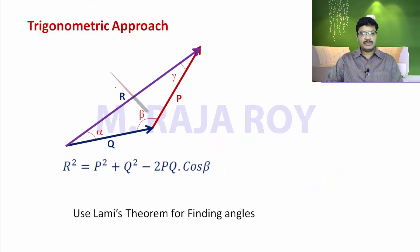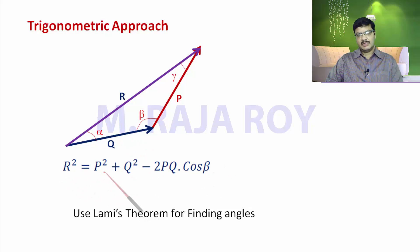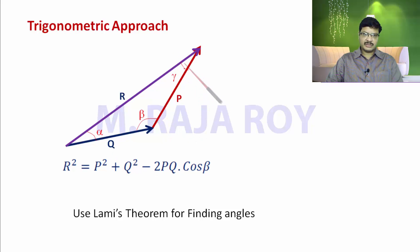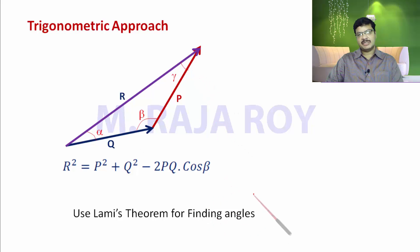For the trigonometric approach — the analytical mathematical method — you can find the resultant using the equation: R equals the square root of P squared plus Q squared minus 2PQ cos beta, where beta is the angle between the two forces. If you want to find the individual angles alpha and gamma, you have to use Lami's equation.